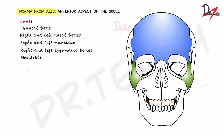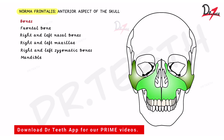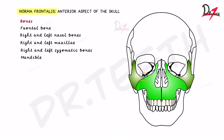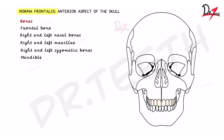The lateral orbital margin is formed by two bones: the zygomatic bone below and the frontal bone above. The infraorbital margin is formed by the zygomatic bone laterally and the maxilla medially. Below this infraorbital margin you will find the infraorbital foramen, through which the infraorbital nerves and vessels pass.